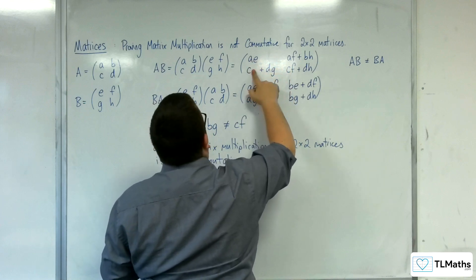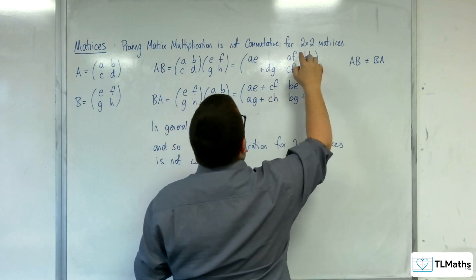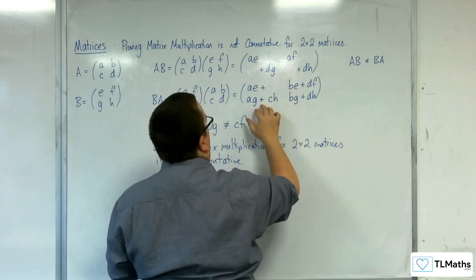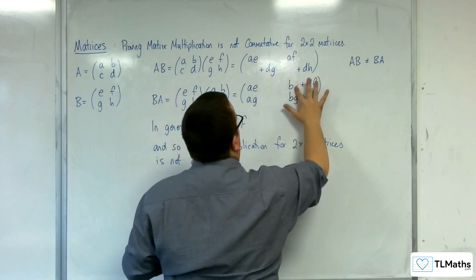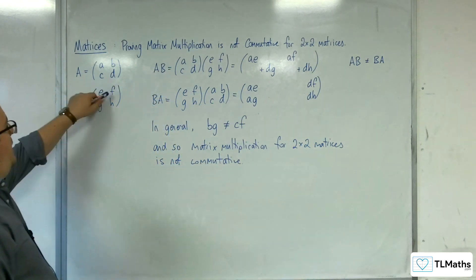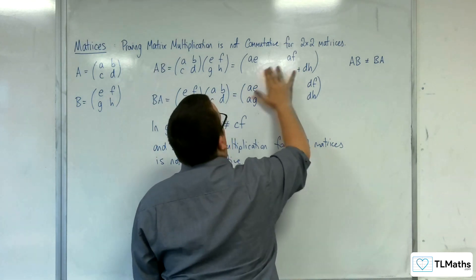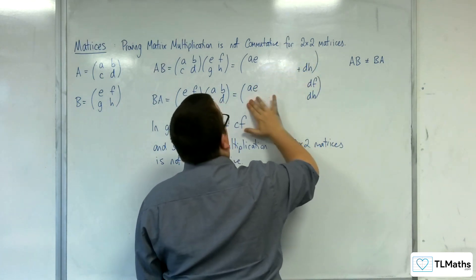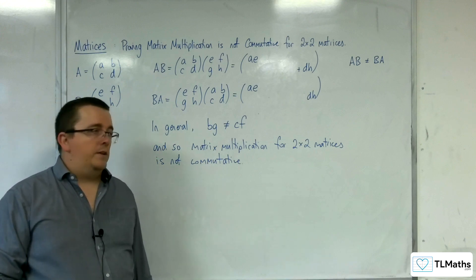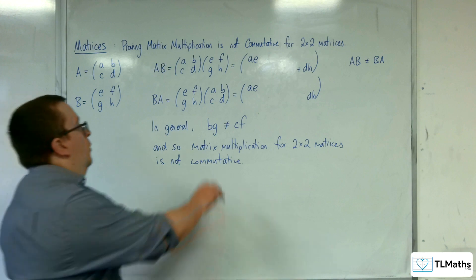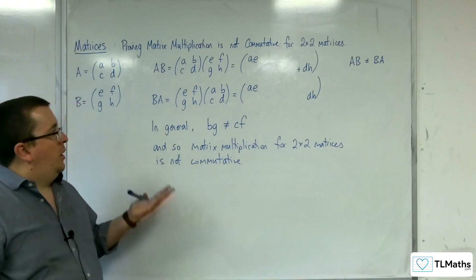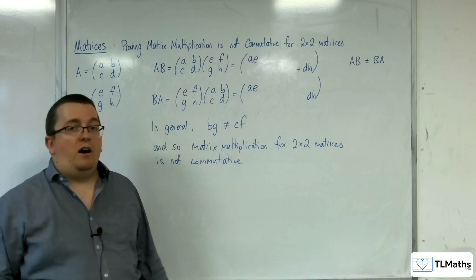If those diagonal entries were 0 — so B and C were 0 — that would knock out those terms. And if F and G were also 0, those terms would be gone as well, and then it does work. So there is an example where it does work if all those were 0. But we can show from this that in general, 2 by 2 matrices are not commutative.